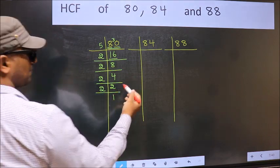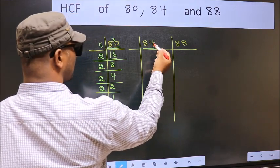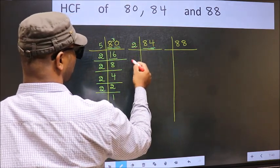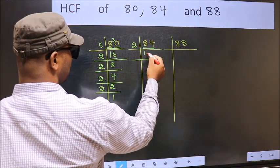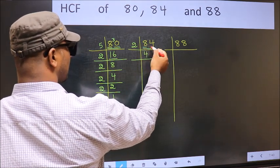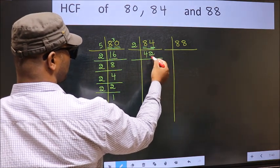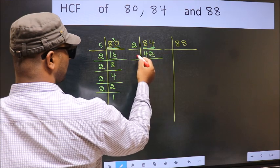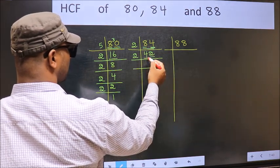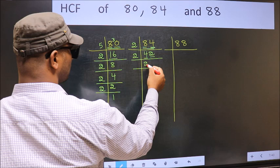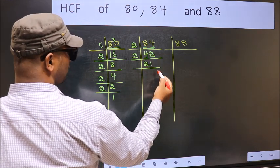Now the other number, 84. Last digit 4, so take 2. First number 8. When do we get 8 in the 2 times table? 2 fours, 8. The other number 4. When do we get 4 in the 2 times table? 2 twos, 4. The other number 2. When do we get 2 in the 2 times table? 2 ones, 2.